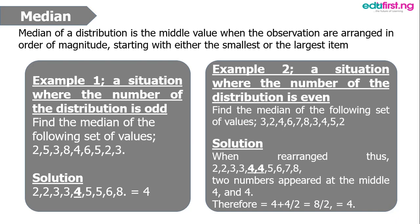The second example is a situation where the number of the distribution is even. In a situation where the number of the distribution is even, after you arrange your numbers in order of magnitude, you pick the two middle values, add them together and divide by 2 to get the value of your median.